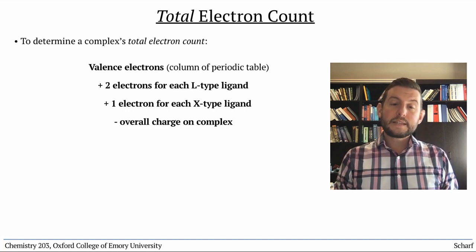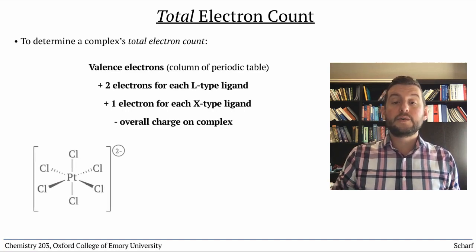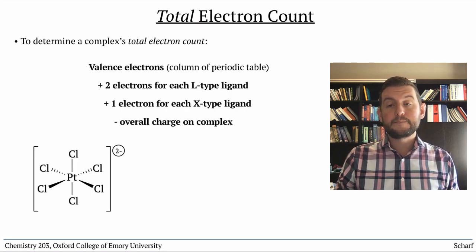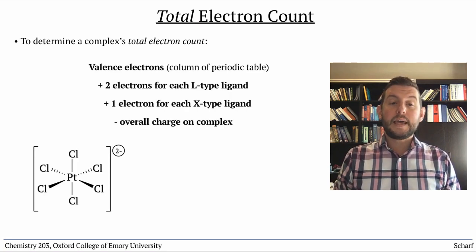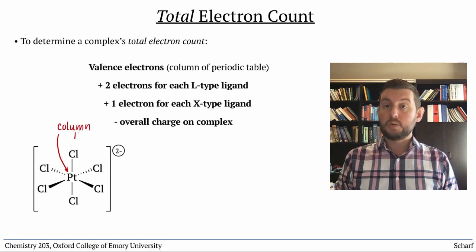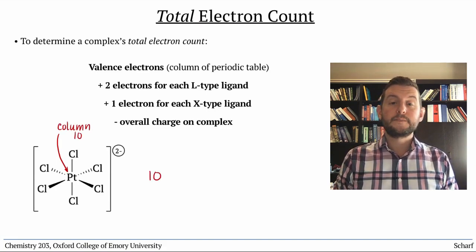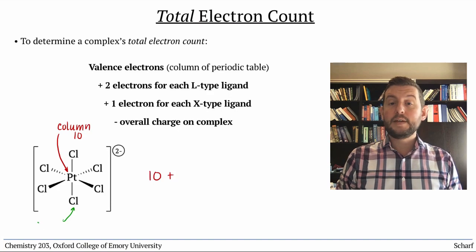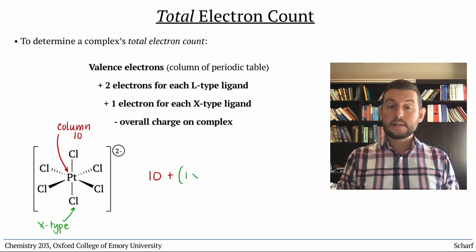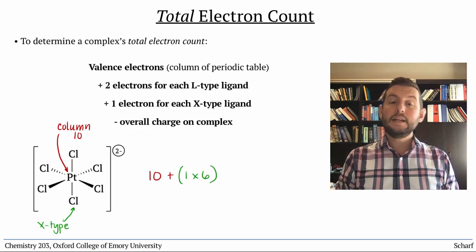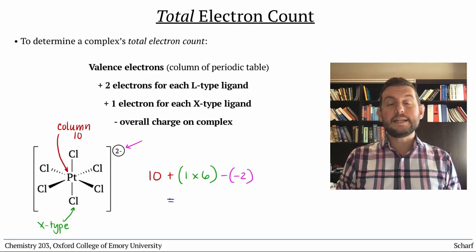So let's calculate the total electron count for the hexachloroplatinate 4- ion. Platinum is in the tenth column of the periodic table, so 10 valence electrons, plus one electron for each of the six Cl- ligands, and we subtract negative 2, the overall charge, for a total of 18 electrons.